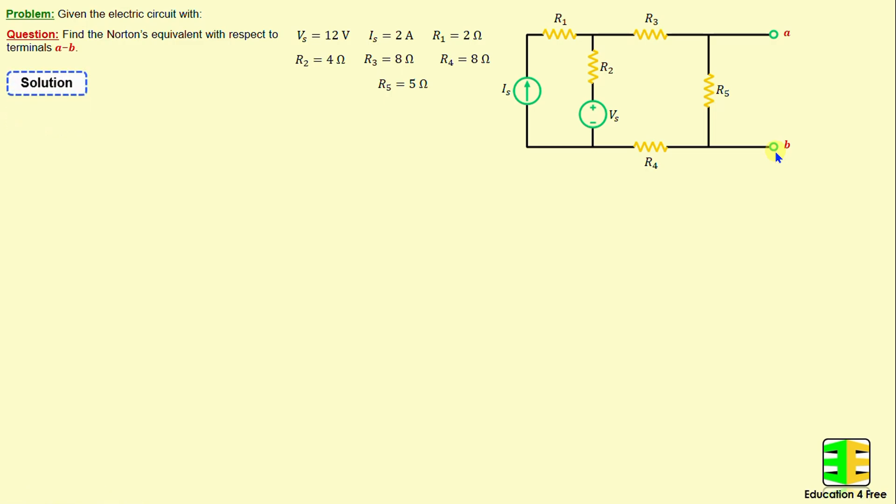Let's move on to the solution. By applying Norton's theorem between terminals A and B, we can replace this circuit with a current source in parallel with a resistor, denoted as IN and RN. I will start first with the determination of Norton's resistance RN. This step can be done by removing all independent sources in the circuit, which means the voltage VS will be replaced by a short circuit and the current IS will be replaced by an open circuit.